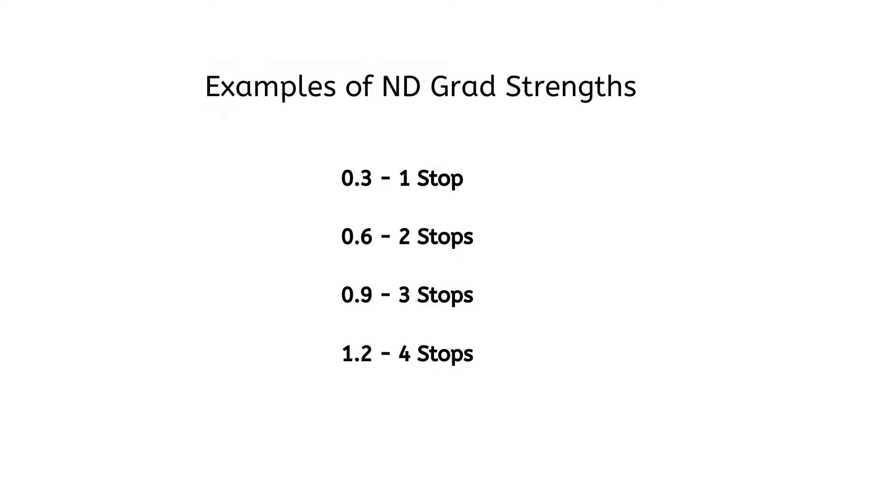This number here will tell you what the strength of the filter is, or how much light the dark part is holding back. They come in different strengths because you're going to be tackling different levels of contrast in different scenarios, so by having a range of filters you're able to match the strength to the situation. As well as different strengths, there are also different styles of ND grad which suit different scenes, but I'll probably cover that in a master class video later on.